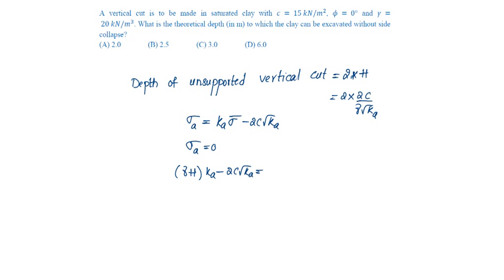From which H will be the depth of tension crack when tension crack occurs. Sigma A will be equal to 0, which will be 2C into root Ka by gamma Ka root Ka. Ka gets cancelled to be root Ka, so H equal to 2C by gamma root Ka. So the depth of unsupported vertical cut will be 4C by gamma root Ka.